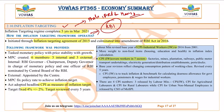How the inflation targeting framework operates: a certain range is given to the RBI and inflation has to be kept within that range, which is 4 plus or minus 2 percent. To ensure inflation stays in this range, the RBI will vary various rates such as the repo rate, MSF, etc. These are the tools with which the RBI adjusts rates in the market.